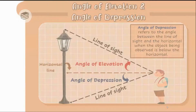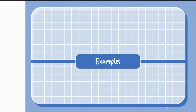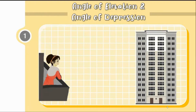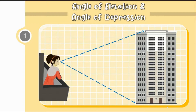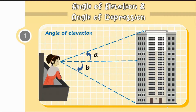Let us have some examples to check if you understood the concept of angle of elevation and angle of depression. Suppose a girl is standing in a balcony of a bungalow and looks at a neighboring building which is taller than her bungalow. She looks at the top of the building — the line of sight is this one — and when she is looking at the bottom of the building, the line of sight is this one. This is the horizontal line. Let us denote the angles formed here by angle A and angle B. Which among these is the angle of elevation and which is the angle of depression?